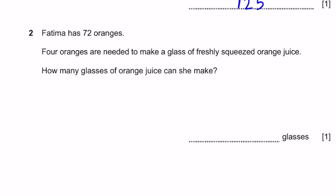Question 2. Fatima has 72 oranges. Four of them are needed to make a glass of freshly squeezed orange juice. How many glasses can she make? That'll be 72 divided by 4, which makes 18 glasses.